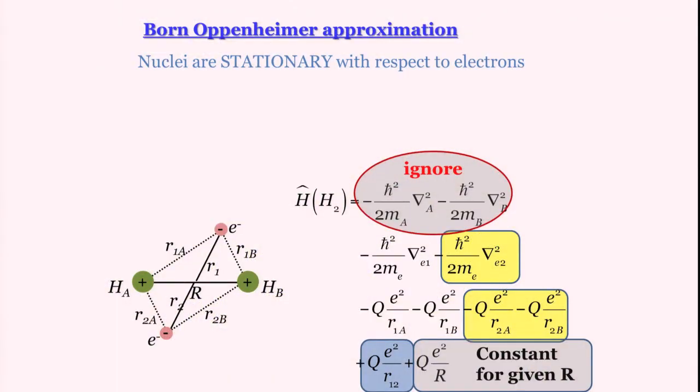Secondly, what we can do is we can take this capital R, inter-nucleus separation, to be stationary, to be the same constant. Well we are not saying that it is always constant. What we are saying is that we can hold it as a constant for any particular calculation.